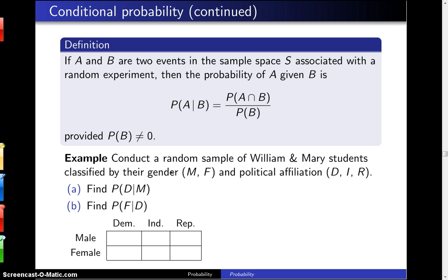Provided the probability of B is non-zero. You can also write the probability of B given A as the probability of A intersect B divided by the probability of A.